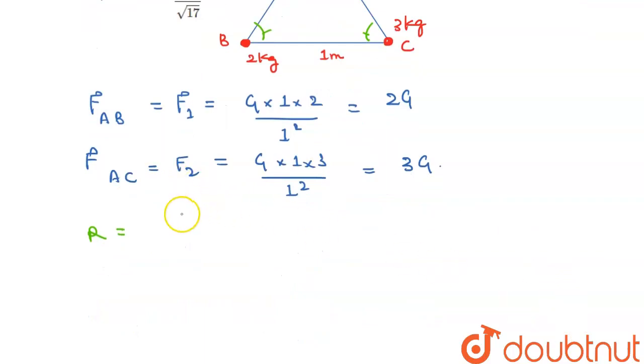So, this will be 2g squared plus 3g squared plus 2g times 3g times cos 60 degrees.